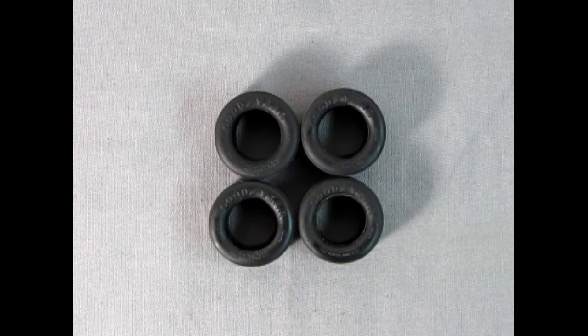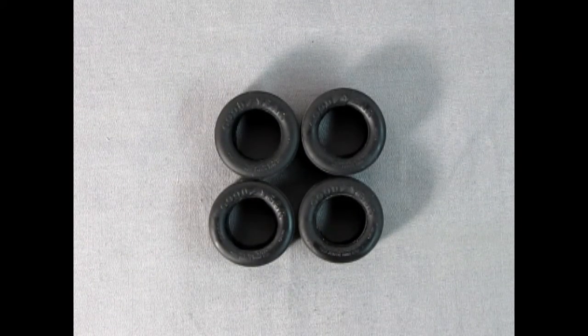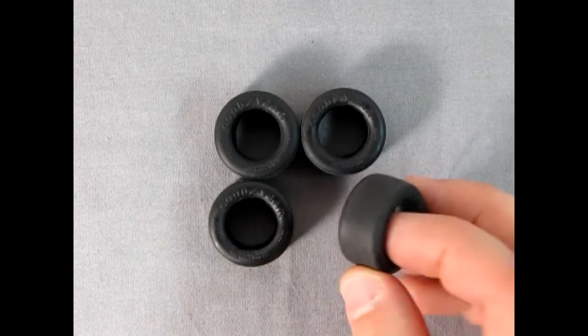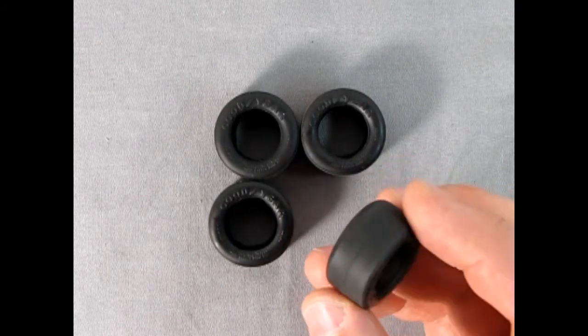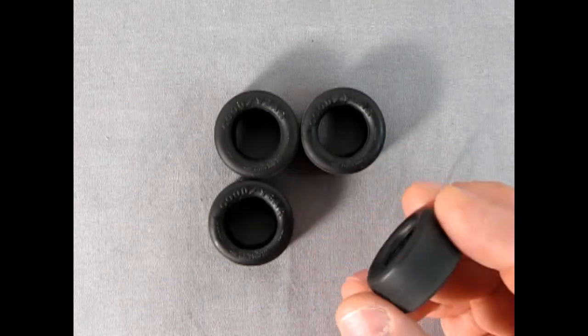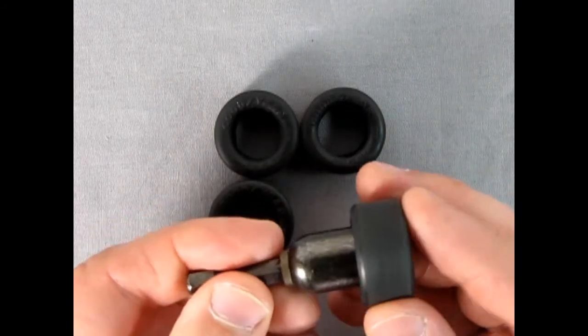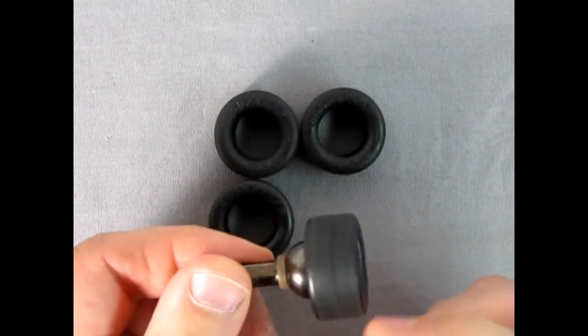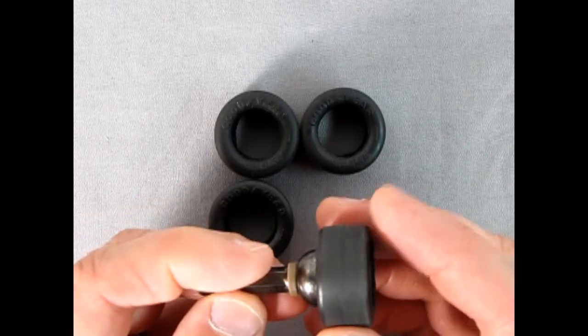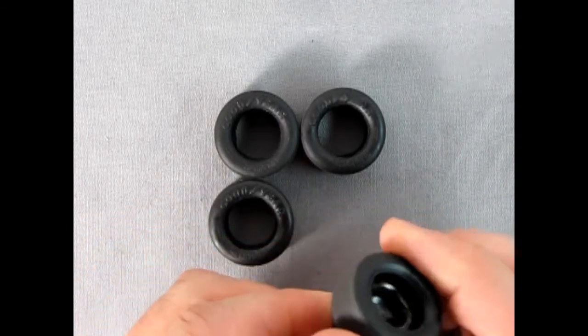Now, here we have our Goodyear Blue Streak Stock Car Special Tires. These are really amazing, actually. They have no tread because they're slicks. And what I did with these is I used my sanding tool and I sanded them out in the drill. They just pop on and use your sandpaper block. Put that in your electric drill and spin away.